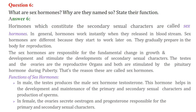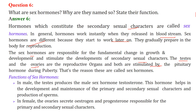What are sex hormones and why are they named so? These are called sex hormones because they constitute the secondary sexual characters. Unlike general hormones that work instantly by releasing into the bloodstream, sex hormones gradually prepare our body for reproduction. They are responsible for fundamental changes in growth and development and stimulate development of secondary sexual characteristics — like breasts in women and beard and moustache in men. The testes and ovaries are stimulated by the pituitary hormone during puberty.